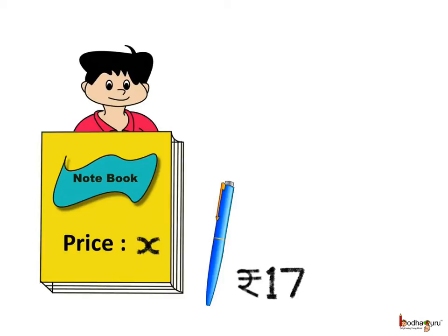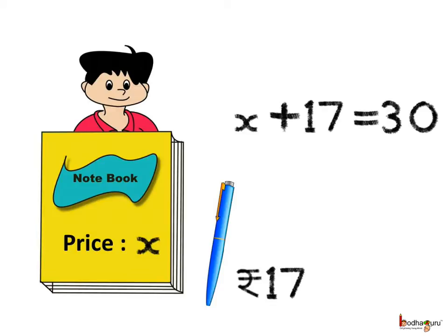Now suppose your friend bought one notebook and a pen costing 17 rupees, and he also spent rupees 30 in total. So we can say the price of the notebook, which is x, plus 17, which is the price of the pen, is equal to 30 rupees.